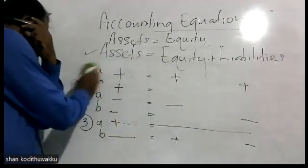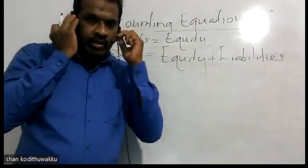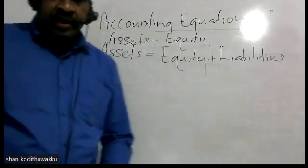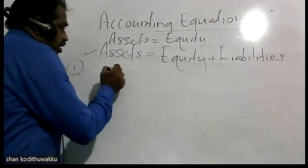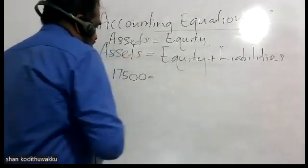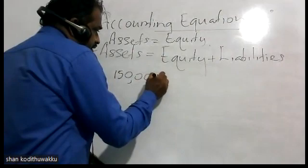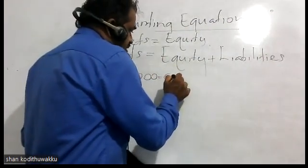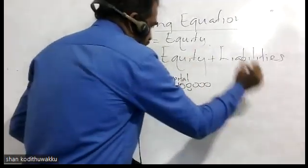We can take an example to understand how to address a business transaction in this accounting equation. Suppose someone has started a new business introducing his capital of 150,000 rupees. Then assets increased by 150,000 — that is cash — because the owner introduced his capital of 150,000. Equal to that, there is an increase in equity, that is capital 150,000. No change in liabilities.